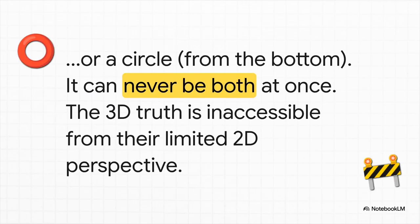But then, another 2D scientist comes along and looks at the exact same cone, but from the bottom. They'll do their own experiments and conclude, with just as much certainty, nope, you're wrong. The object is clearly a circle.